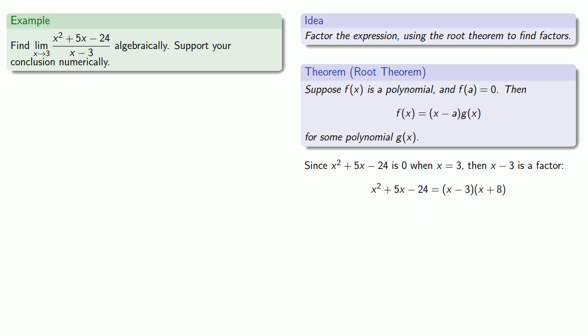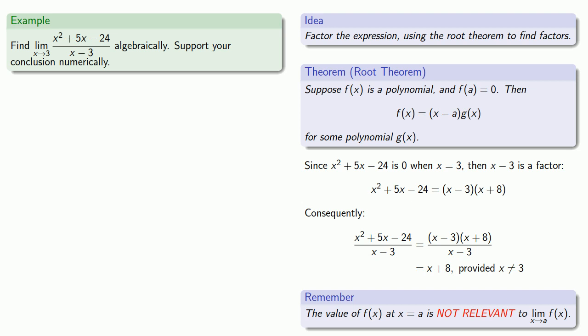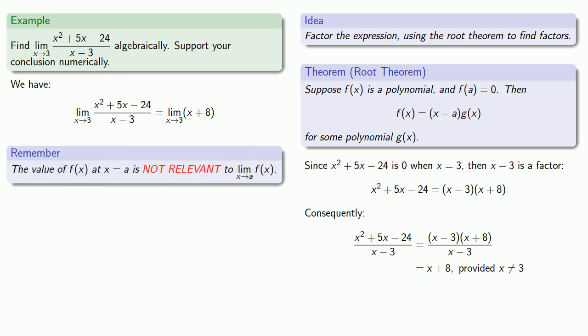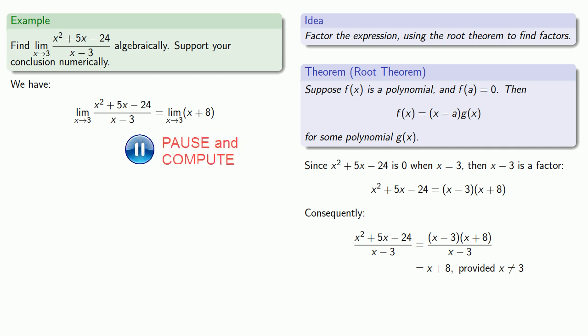And this means my rational expression can be written as x minus three times x plus eight over x minus three. And I can simplify that to x plus eight, provided that x is not equal to three. What if x is equal to three? Since we're taking a limit, we don't care. So, the limit of this rational expression is going to be the same as the limit of the simpler expression. And that's because the only two places that these functions are different is at x equals three, and the value of the function at x equals three is not relevant to the limit as x approaches three. So, we find our limit, which will be 11.